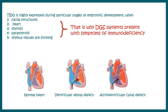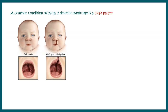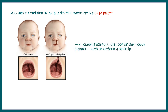Other than the heart, there would be complications associated with the thyroid and parathyroid gland. Another important feature of DiGeorge syndrome is the presence of a cleft palate — an opening or cleft in the roof of the mouth where the upper lips are not fully joined.